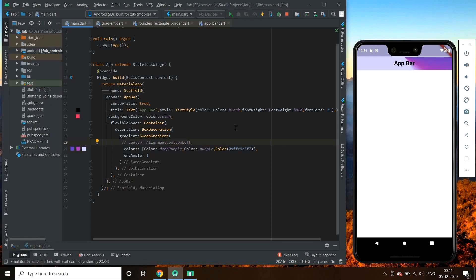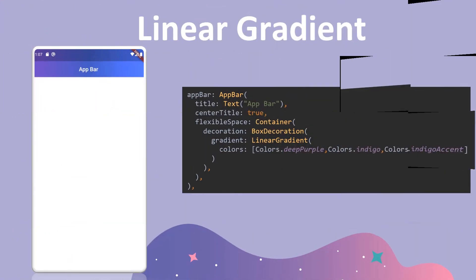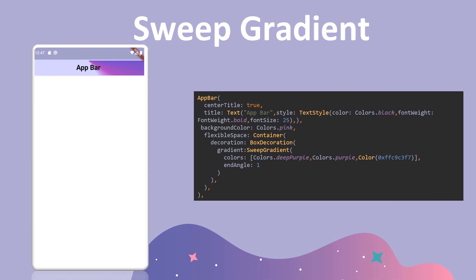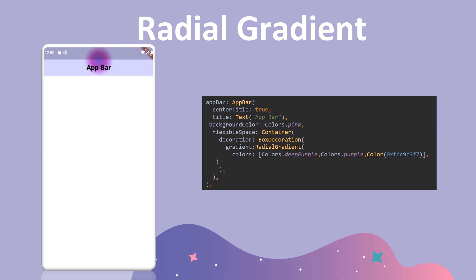So this was all about gradients. Let's have a summary. First we looked at linear gradient in this video. Then we looked at sweep gradient, which was at its best at end angle 1. And then we looked at radial gradient. So that's all — subscribe to our channel and stay tuned. Thank you.